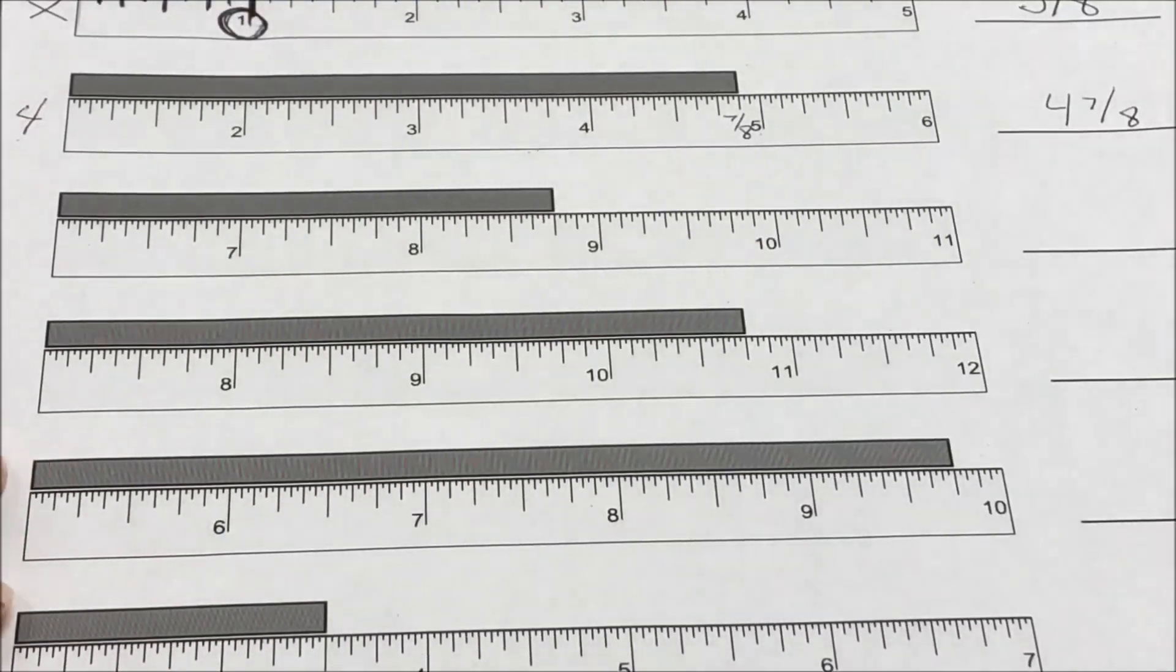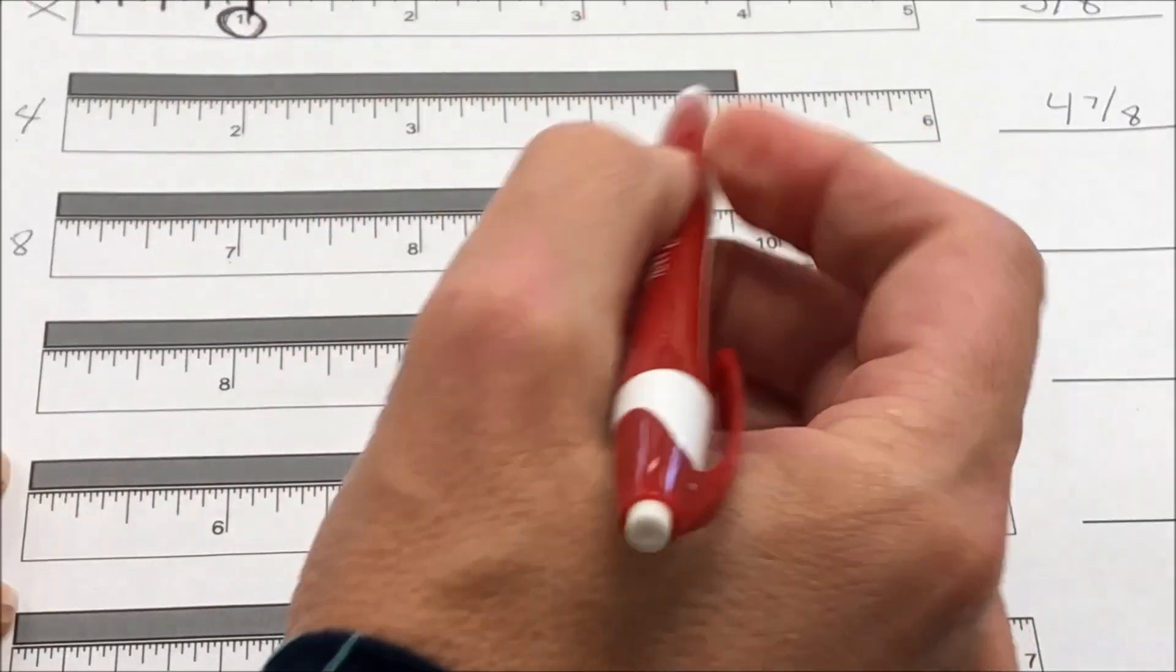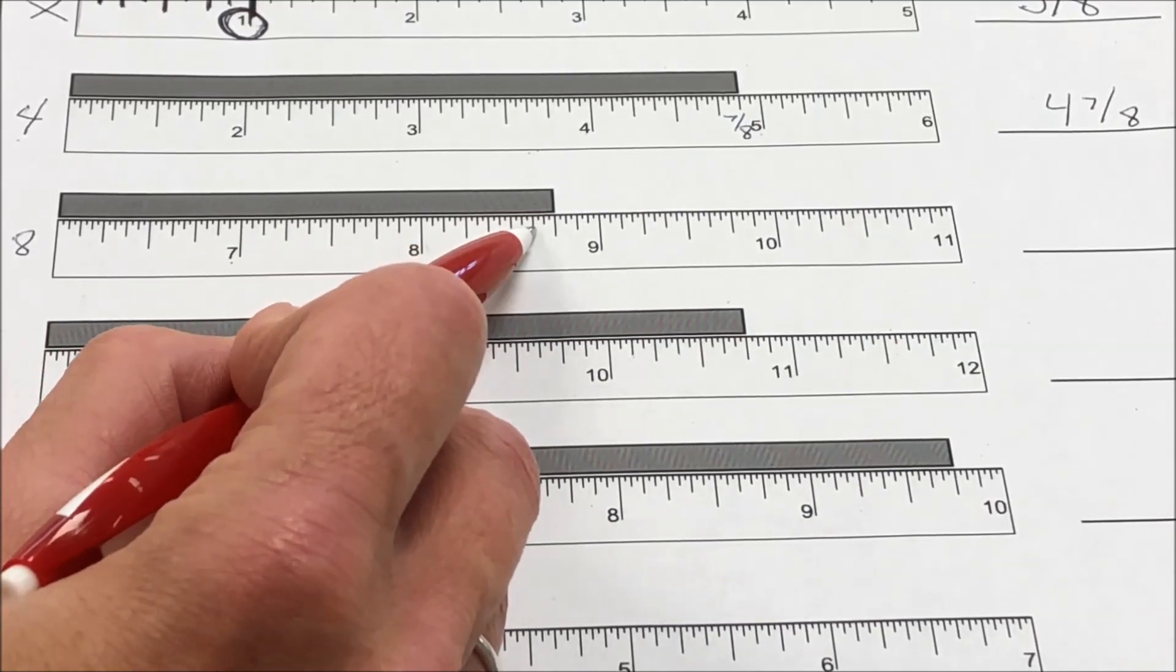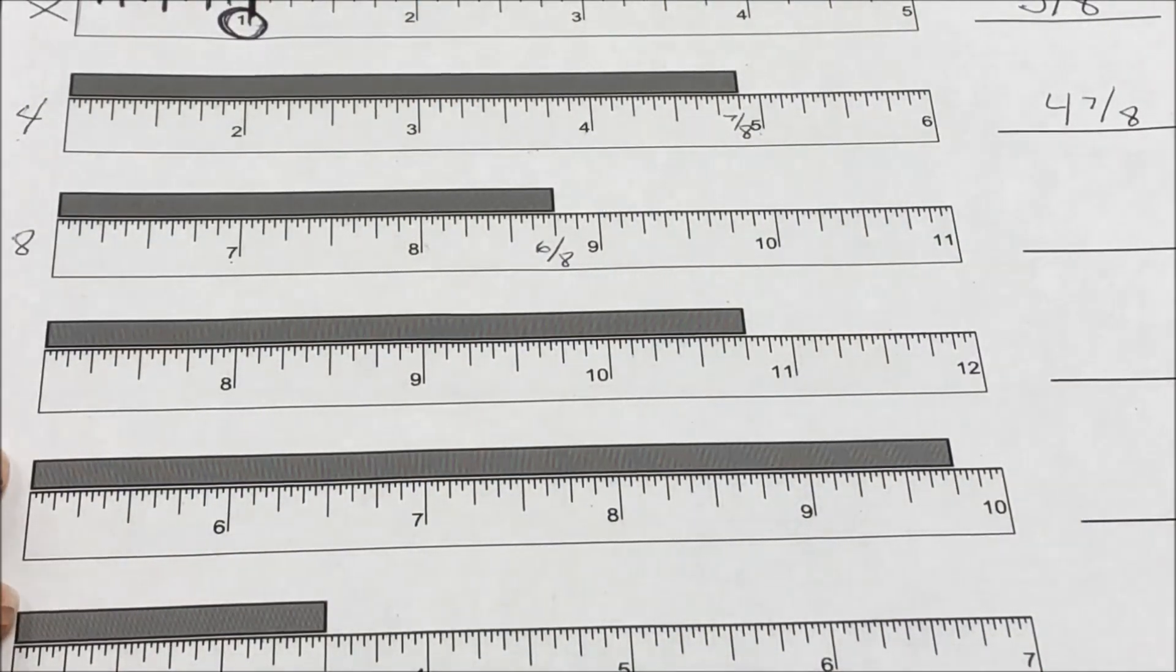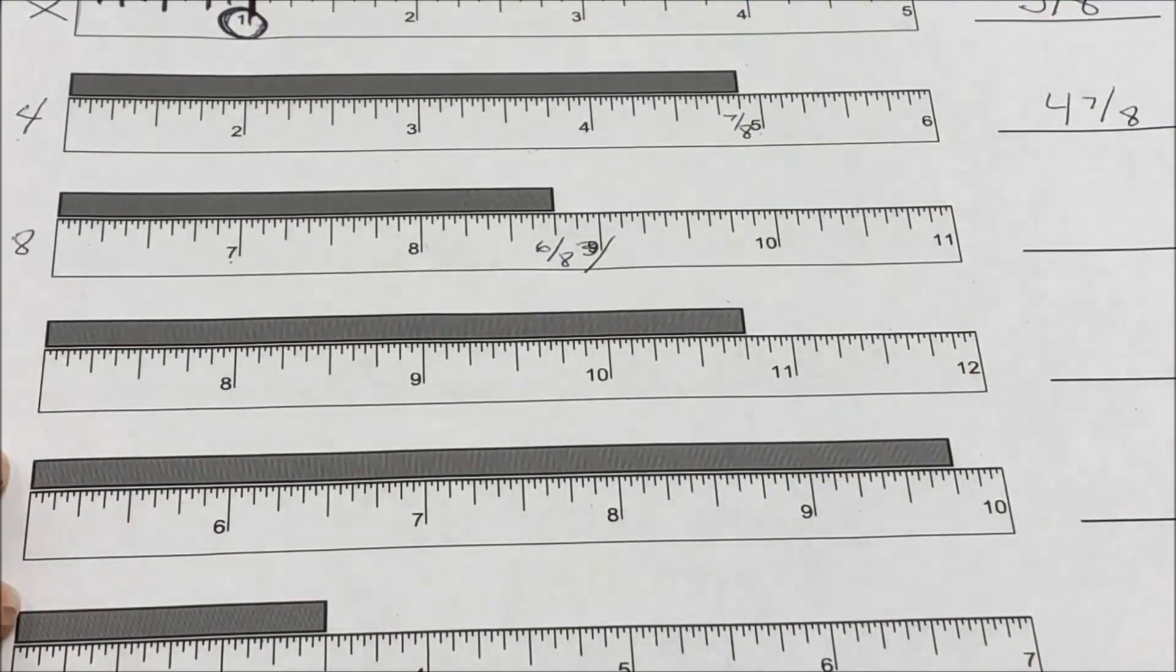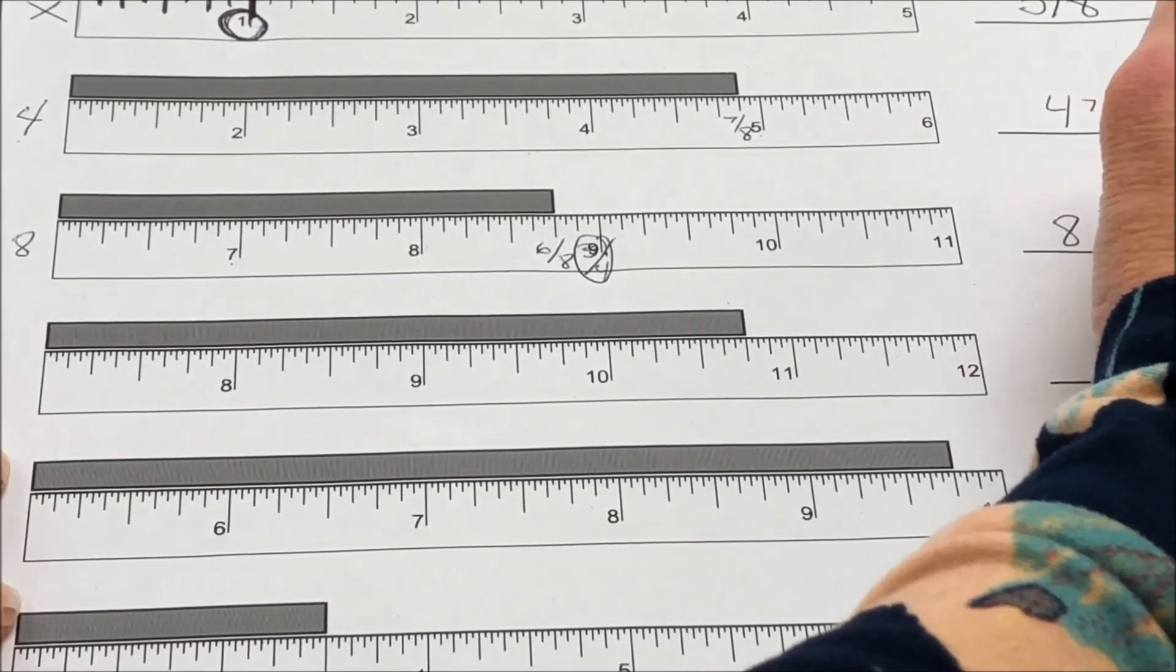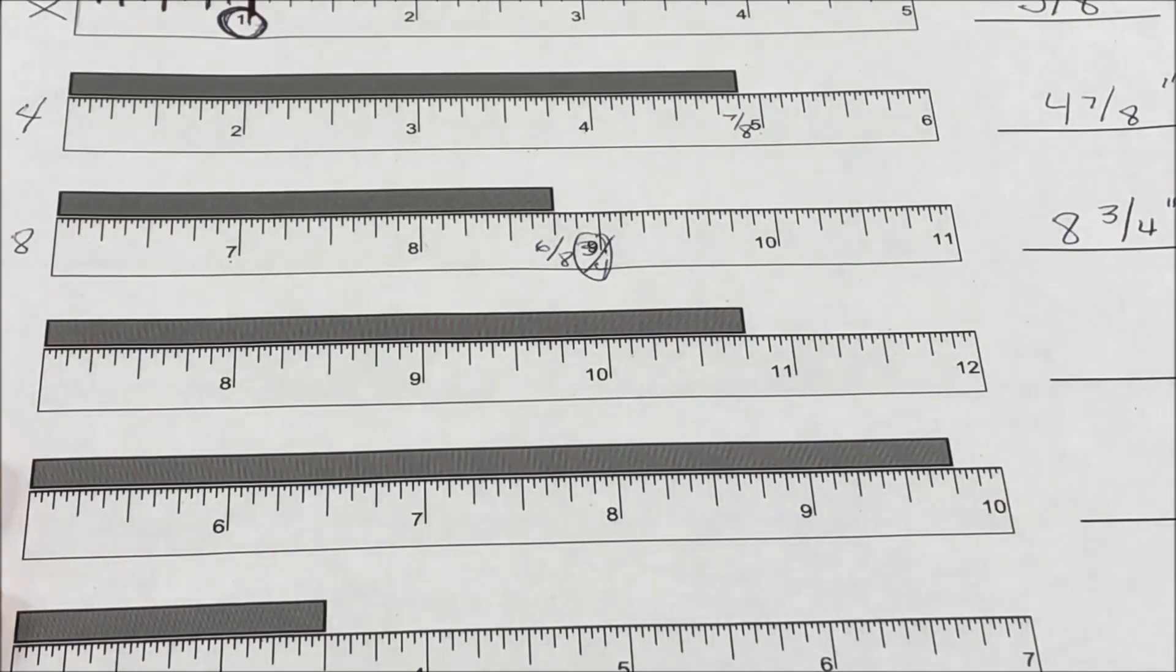We'll do a couple more examples here. So this one is going to be an 8. And so I've got 1/8th, 1/4th, 3/8ths, 1/2, 5/8ths, and 6/8ths. Well, when I have 6/8ths, 2 actually goes into 6 three times, and 2 goes into 8 four times. So that's going to be 3/4ths. So my actual measurement will be 8 and 3/4 inches. I forgot to label this one. That's 4 and 7/8ths of an inch.